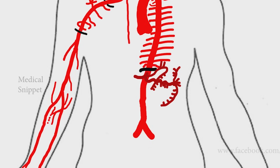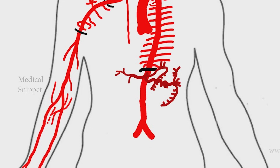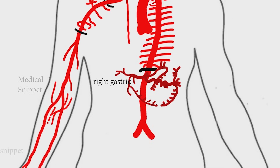The common hepatic artery branches into the proper hepatic artery, gastroduodenal, and right gastric arteries. The proper hepatic artery divides into left and right hepatic arteries. The right hepatic artery gives the cystic artery. The gastroduodenal artery divides into the superior pancreaticoduodenal artery and the right gastroepiploic artery. The right gastric artery runs along the lesser curvature of the stomach.